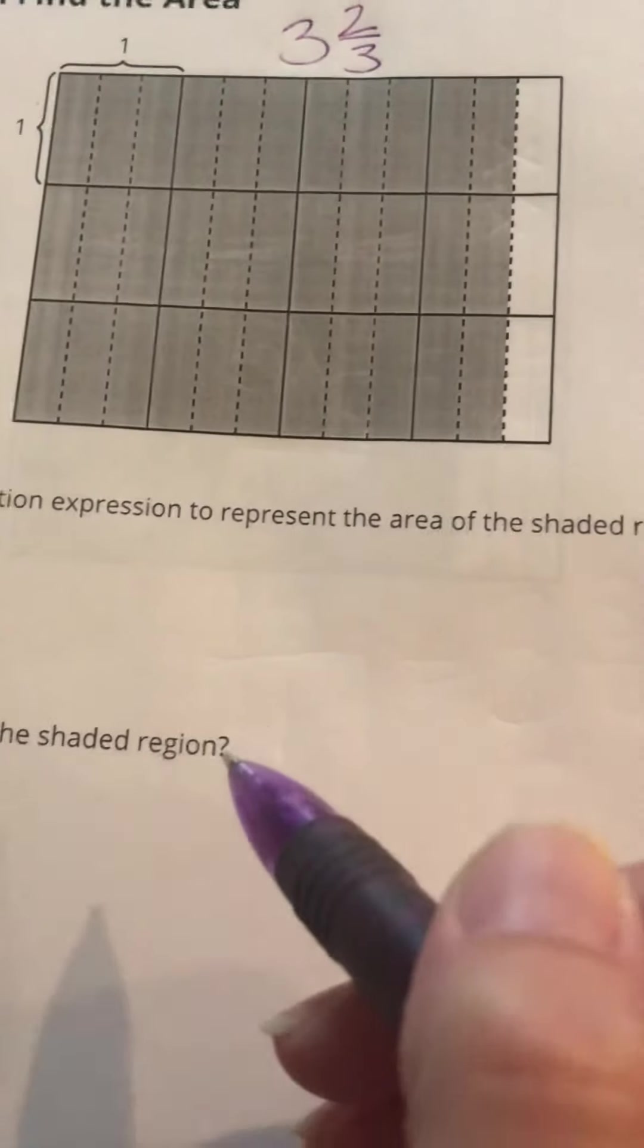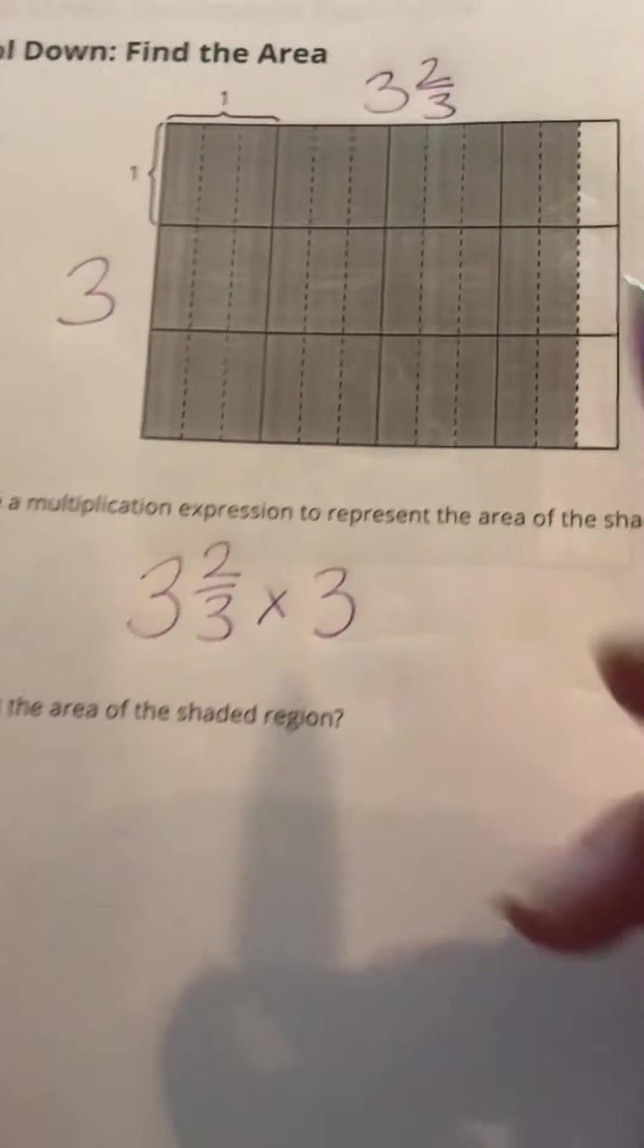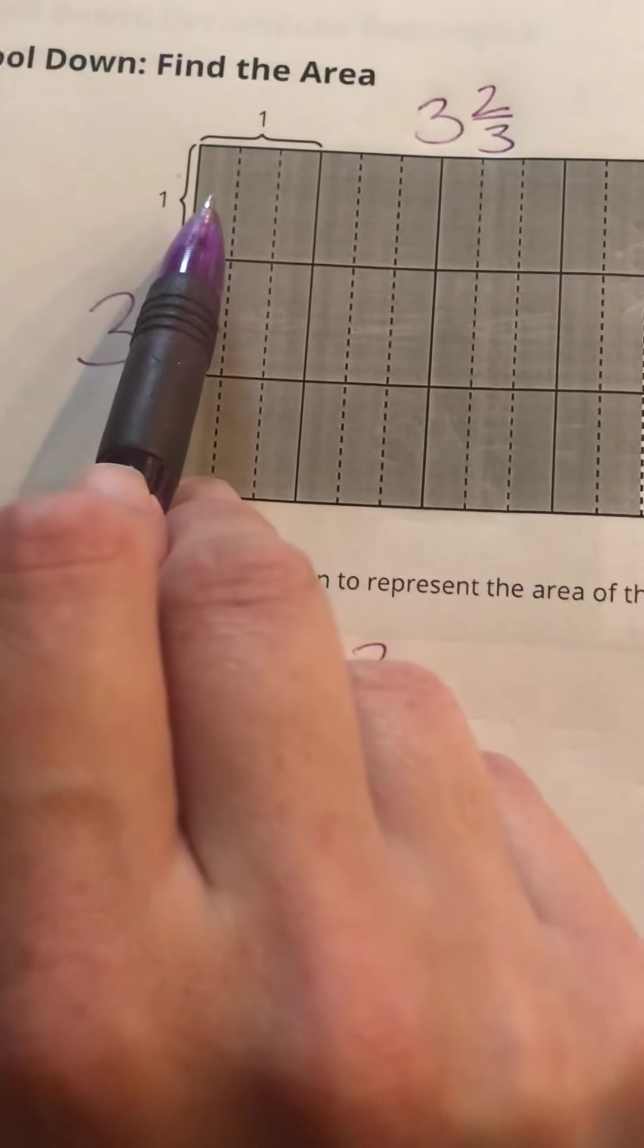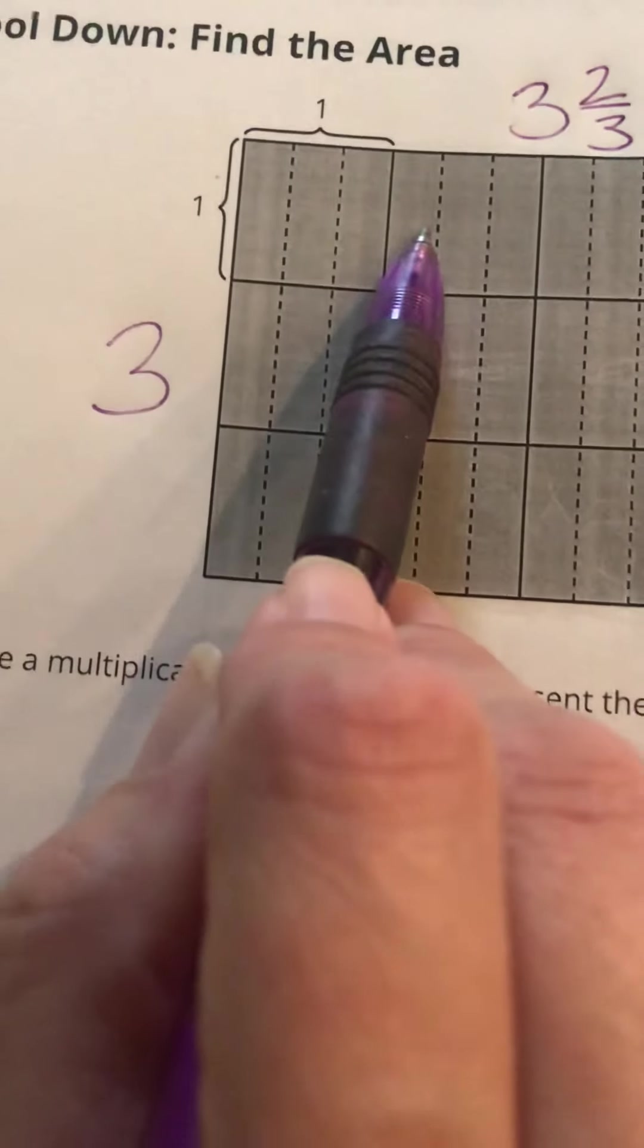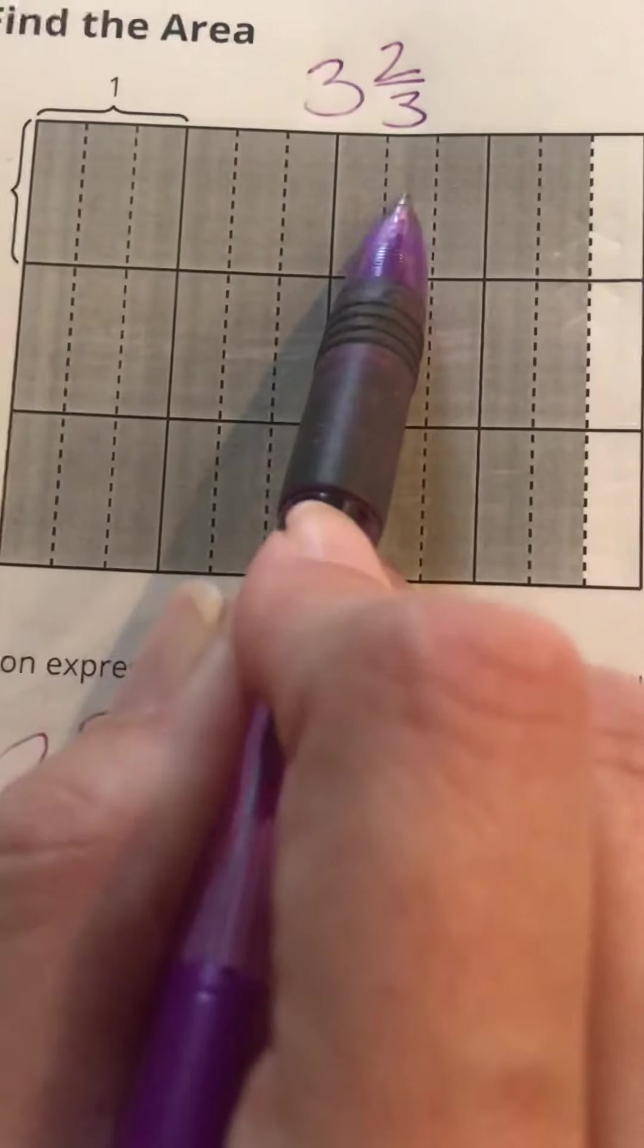So I've got 3 and 2/3 times 3. So my multiplication expression would be 3 and 2/3 times 3. Or I could have counted these individually. This is 1, 2, 3, 4, 5, 6, 7, 8, 9, 10, 11.